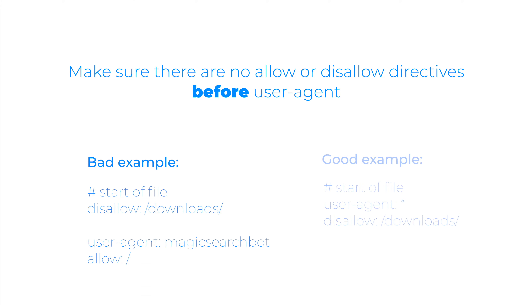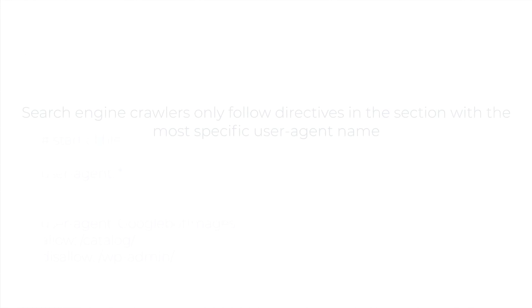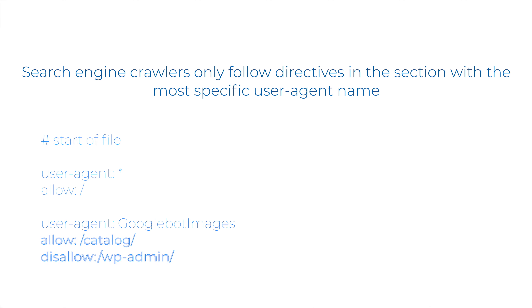Here is the correct way, where all search agents are disallowed from crawling the downloads folder. Please know that search agent crawlers only follow directives in the section with the most specific user agent name. For example, if you have directives for user agent asterisk, which matches all agents, and user agent Googlebot Images, Googlebot Images will only follow the directives in the Googlebot Images section.